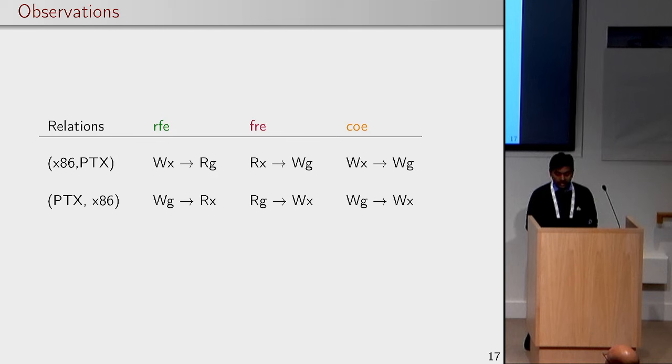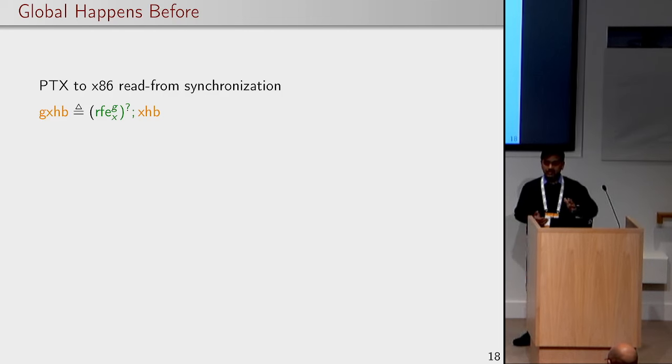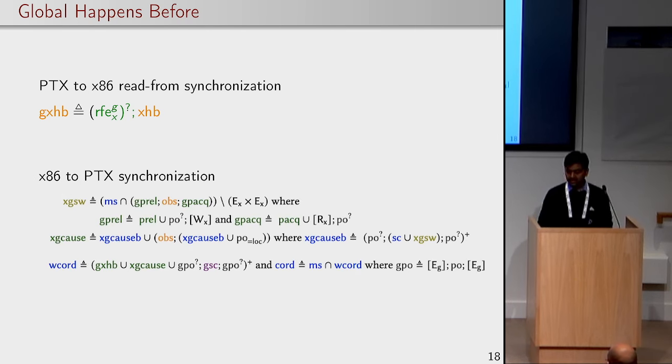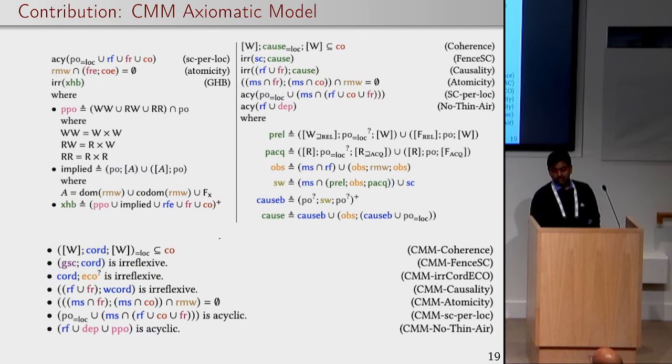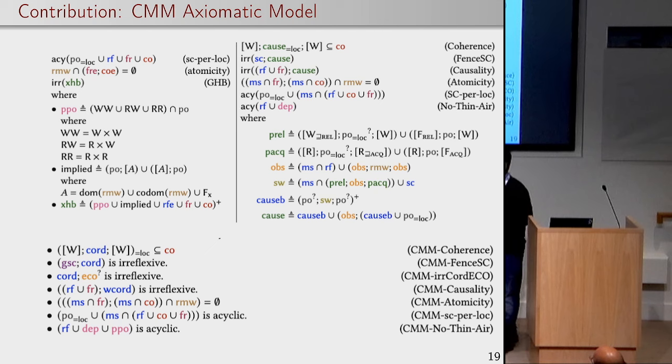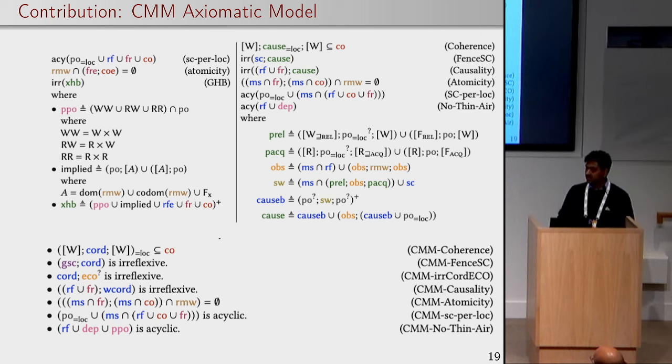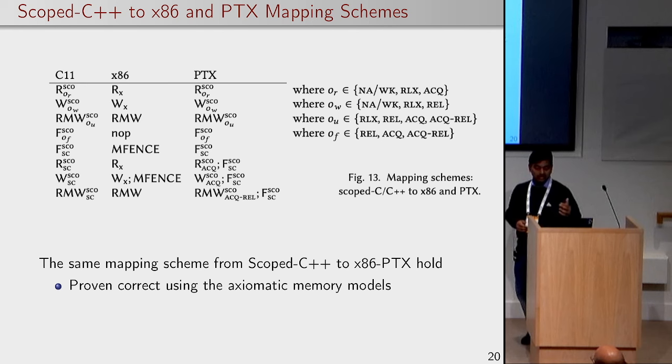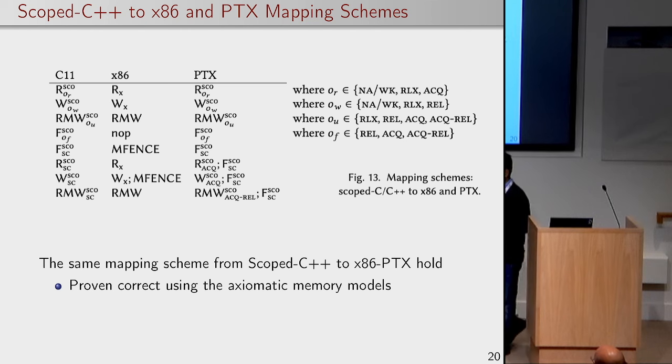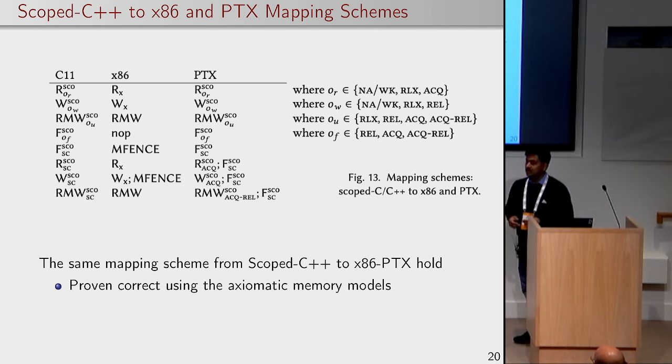This is the existing mapping. We wanted to keep this. For the modeling, how much time do I have? Six minutes. We wanted to understand axiomatically these relations and essentially what we try to do is to understand especially the read from relations when they are going from one side to the other. I am not going to explain the relations but there are several subtle definitions which we had to develop. Finally combining these two we got yet another complicated model - that is the compound memory model between the x86 and the CPU. This model could preserve the memory mapping from the scoped C++ programming language to each of these individual processors, and we could prove them.